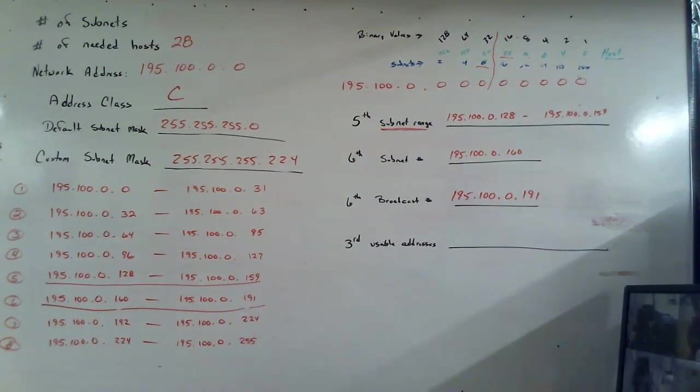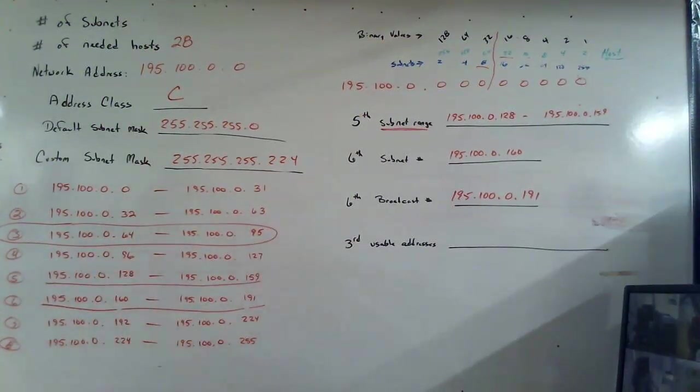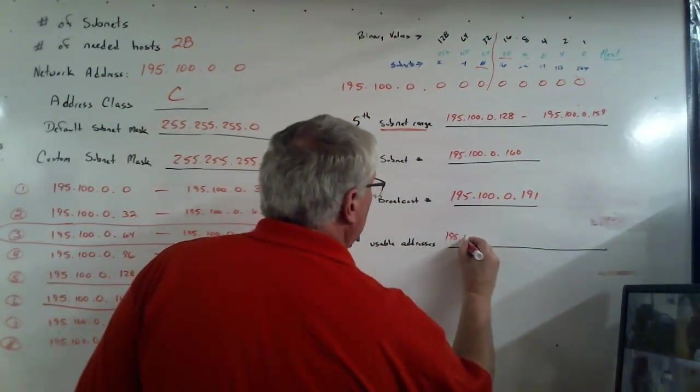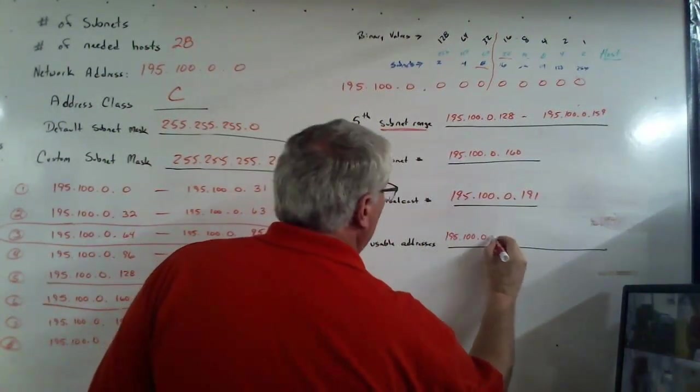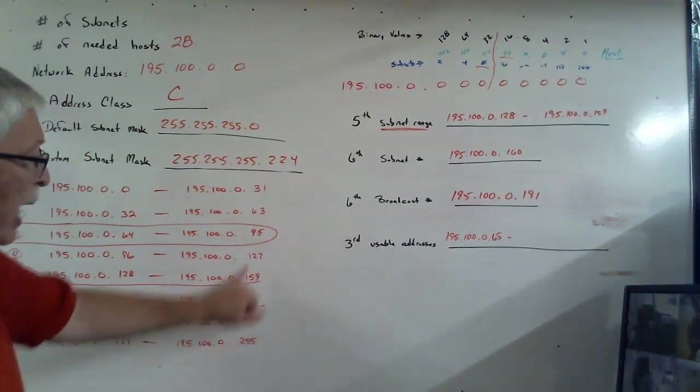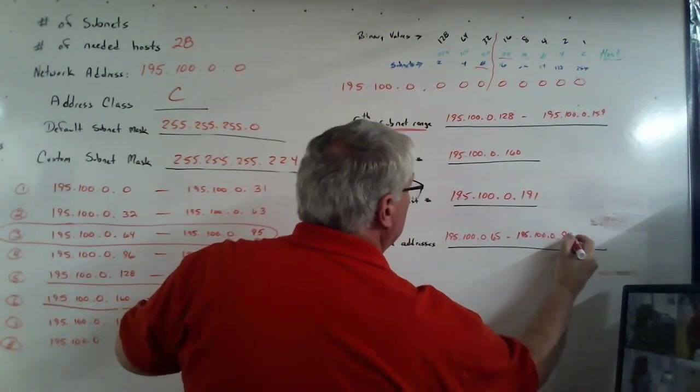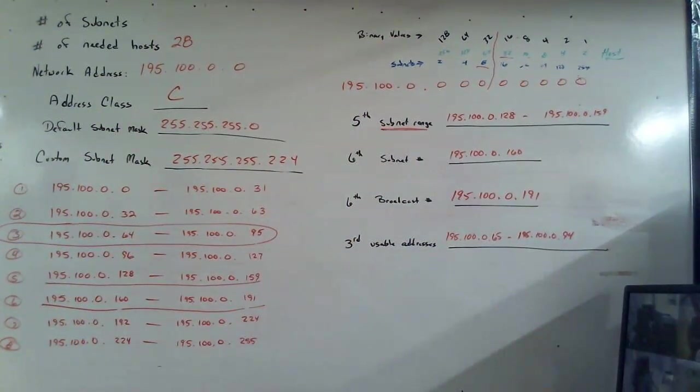Last but not least, on the third subnet, we want to know the usables. So, here's my third. Starts at 64, goes to 95, but I cannot use 64. I cannot use 95. It's only the numbers in between. So, we're going to start with 195.100.0.65, because we're going to add one to the left. And we're going to go all the way up to one number short or subtract one from the right. 195.100.0.94. It's always the same process. Just take it one step at a time. I have one more little piece of an example I'd like to show you. So, hang on. I will be right back.